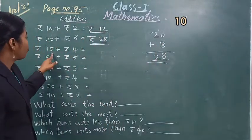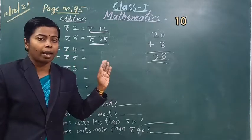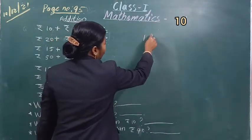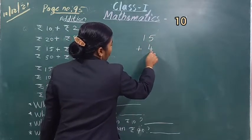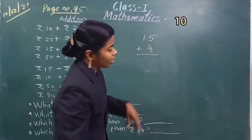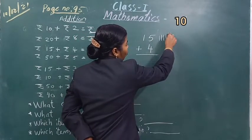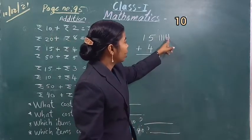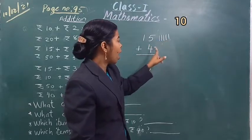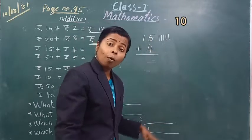Then next: रुपीज 15 plus 4. 15 रुपीज के साथ कितने रुपीज add करना है? 4 रुपीज. 15 plus 4. यह देखो, इदर 5 के नीचे 4 है, इन दोनो numbers को plus करना है. इदर 5 है — 1, 2, 3, 4, 5 strokes बनाया. और इस 5 के साथ 4 number add करना है.